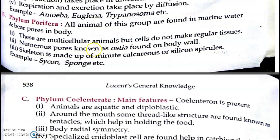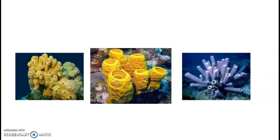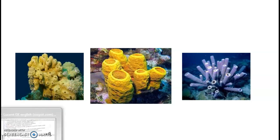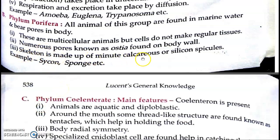Porifera organisms are called sponges — they live in sea water and have many holes in their body called Ostia. The main large hole through which water goes inside is called Osculum. The skeleton is made up of minute calcareous and silicon spicules. Examples to remember are Sycon and Sponges.